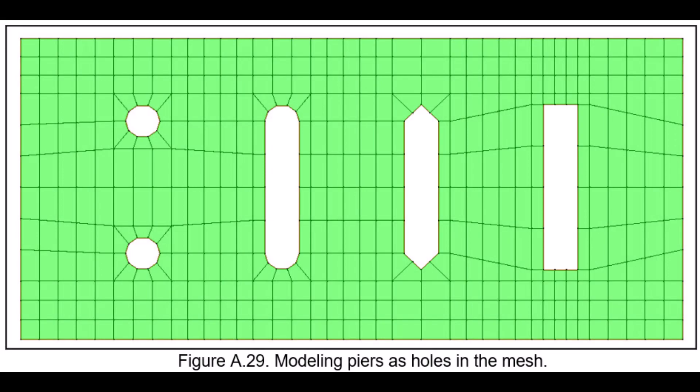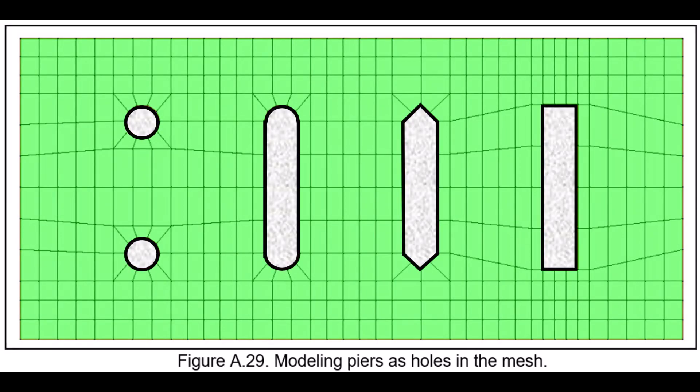Figure A29 in FHWA's 2D reference document shows several ways that a pier may be modeled as holes in the mesh. The hole should be similar in size and shape to the outline of the pier.